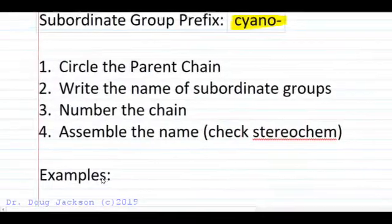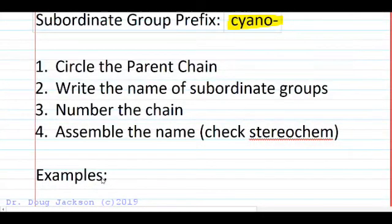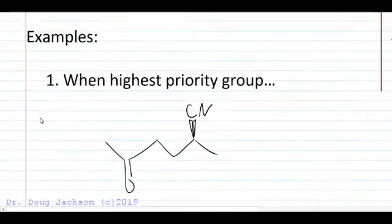We're going to circle the parent chain, being careful to write the names of any group that intersects that chain, number the chain with the appropriate IUPAC priority for numbering, and we'll assemble the name checking for stereochemistry. So this is a way to be careful about naming compounds so we don't make careless errors.